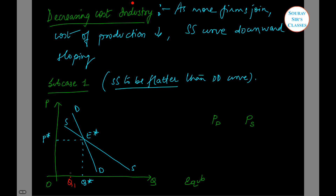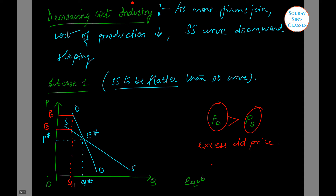Say OQ1 is the quantity in the market. This gives us a demand price PD and a supply price PS. The demand price is still greater than the supply price, so there is excess demand price. Producers will react by increasing the output level, moving towards the equilibrium point E*. So the equilibrium will be stable again, in the Marshallian sense.